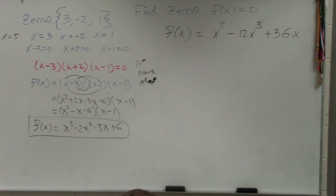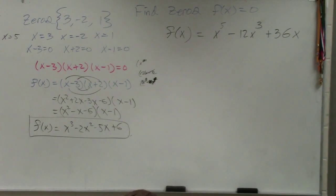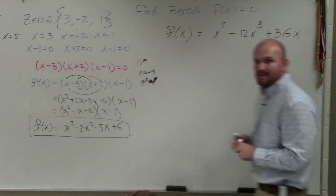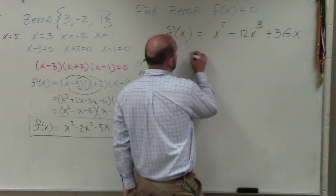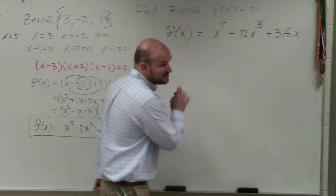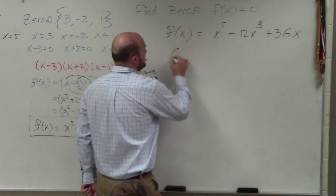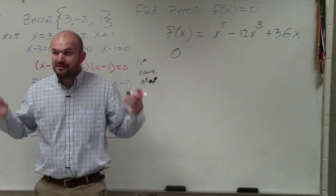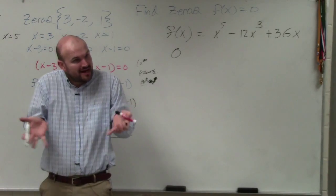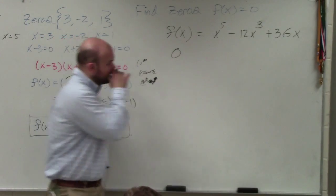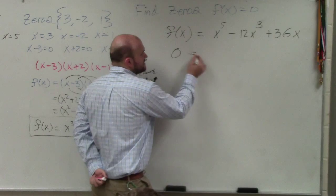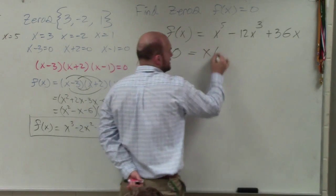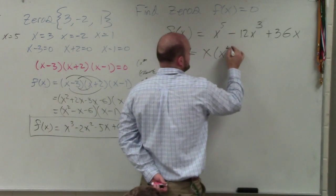If you're going to do a problem like this, the first thing I would do — actually, first thing is set f of x equal to 0. If I'm trying to find the zeros, the zeros is when f of x equals 0. So you set this equal to 0. Next, factor out any GCF — I see that they both share an x.